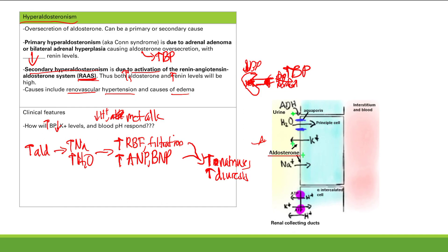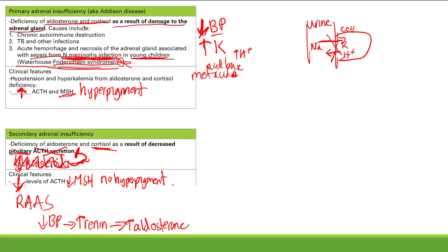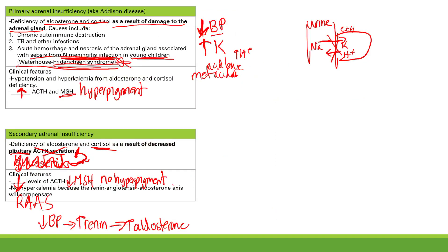To summarize: understand how aldosterone works in the kidney's collecting tubules, and understand the renin-angiotensin-aldosterone axis. For adrenal insufficiency, know that hyperpigmentation is seen in primary but not secondary — explainable through the feedback axis. Also know Waterhouse-Friderichsen syndrome. That's it for this lecture.